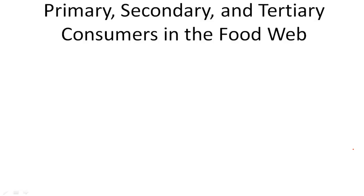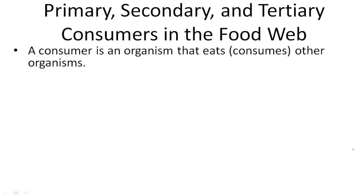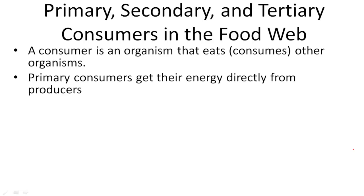Now let's talk about consumers. A consumer in a food web is just an organism that eats another organism. Primary consumers get their energy directly from producers. So if I had grass and there was an ant that ate the grass, that would be a primary consumer.